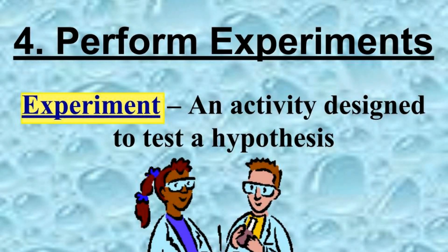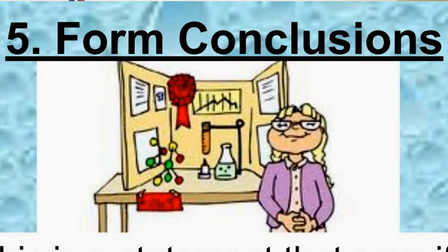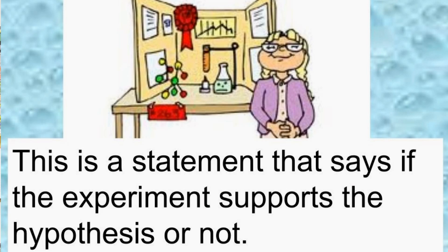An experiment is an activity designed to test a hypothesis. We do experiments to find out if our hypothesis was right or wrong. Sometimes it's proven true, and sometimes it's not — and that's okay. Our fifth and final step is to form conclusions. A conclusion is a statement that says whether the experiment supports the hypothesis or not. If I found the radio was already plugged in, I'd need to check something else — like the volume — and do another experiment.